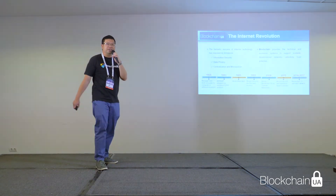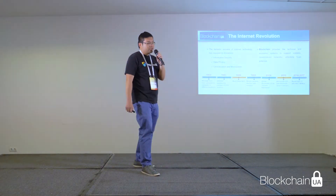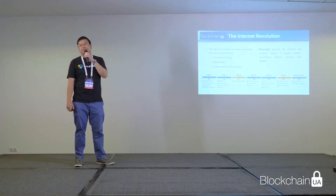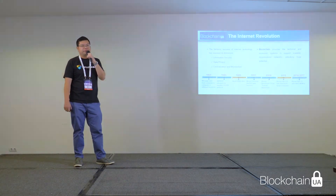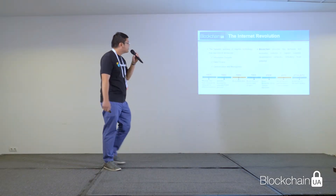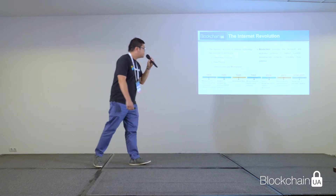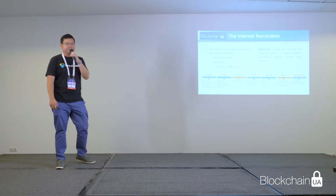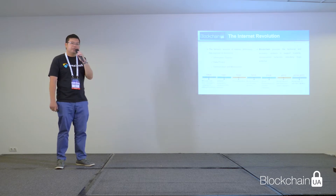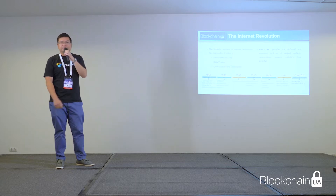And of course, data privacy. A lot of you might have received calls from companies — people from banks or insurance trying to sell you products. These are all data privacy leakages. And last but not least, blockchain is here to solve centralization and monopolism. I will tell you how blockchain will be able to help address these three issues faced by all of us today.